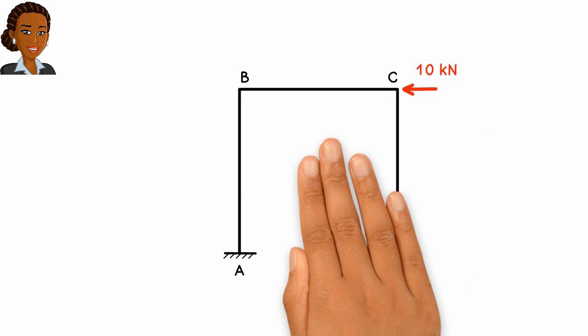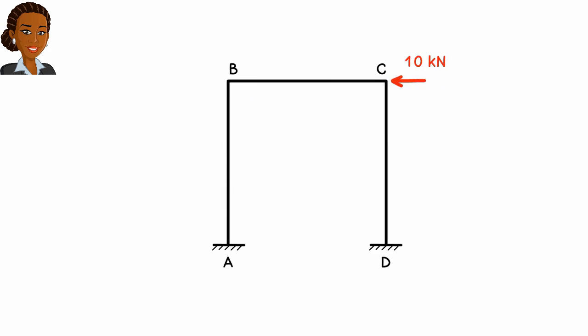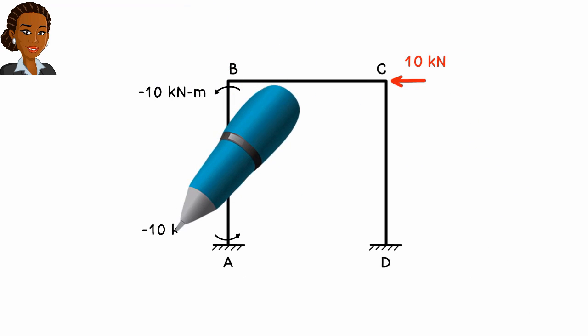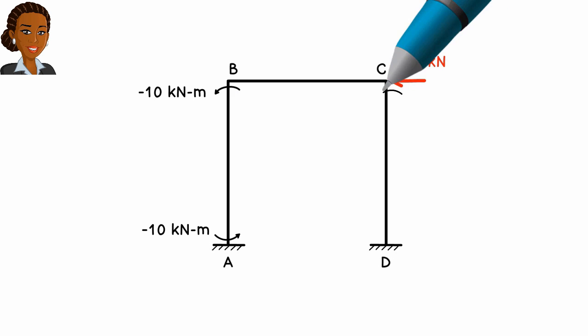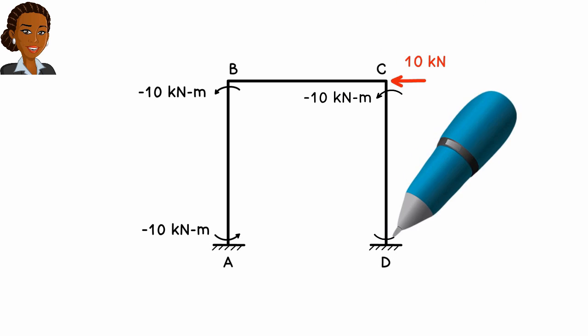In a way, we are assuming a value for the fixed end moments. Using the same delta, we can also determine the fixed end moments for member CD. They are also negative 10 kN-m.